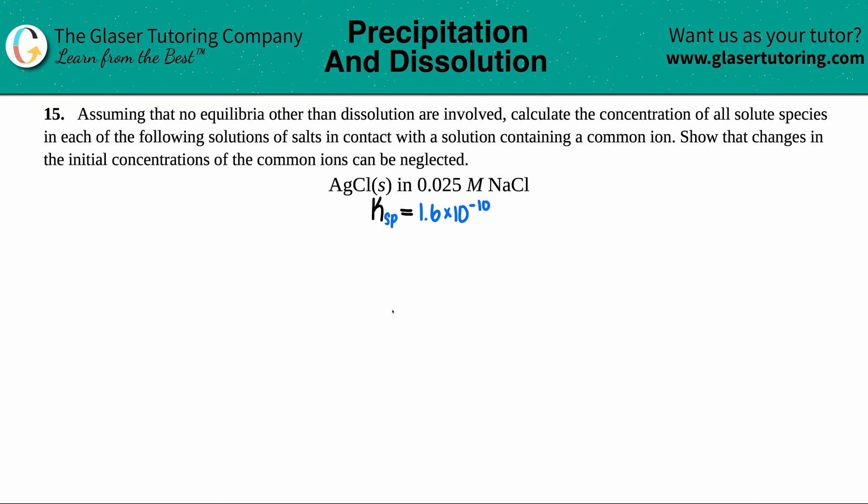Number 15, assuming that no equilibria other than dissolution are involved, calculate the concentration of all solute species in each of the following solutions of salts in contact with the solution containing a common ion, and then show that changes in the initial concentration of the common ions can be neglected. So first things first, we have silver chloride, AgCl solid, and this is in 0.025 molarity of sodium chloride, NaCl.